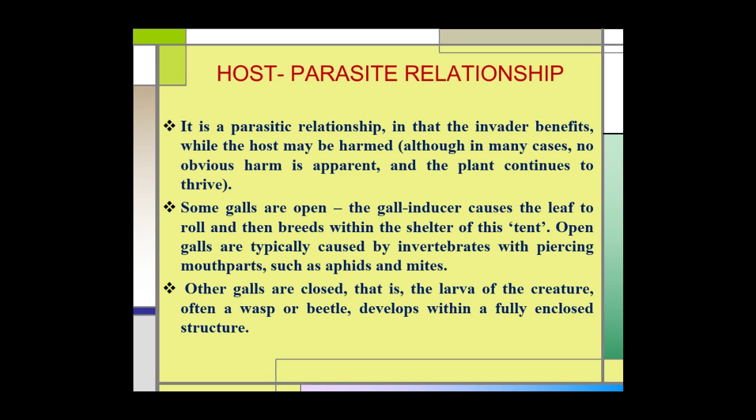In many cases, the harm to the plant is not very much and the plant continues to thrive very well. Some galls are of open type, and the gall inducer causes the leaf to roll and then breeds in that site. Open galls are typically caused by invertebrates which have a piercing type of mouth part, such as aphids and mites. The other type of galls are of closed type, in which the larvae of the creatures, often a wasp or beetle, develop within a fully enclosed structure.